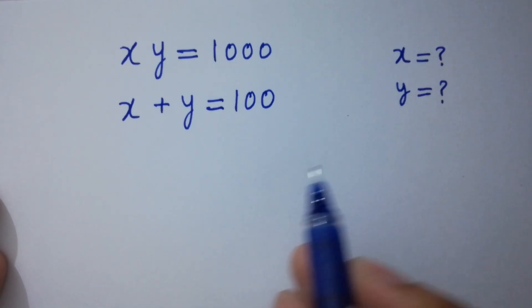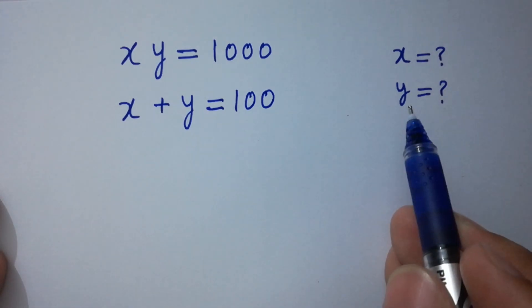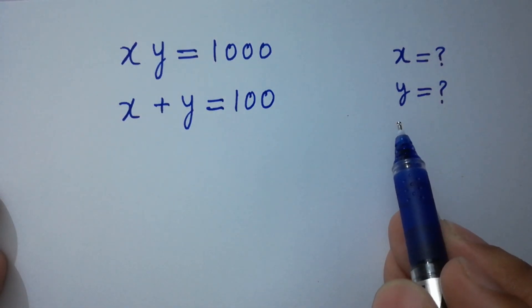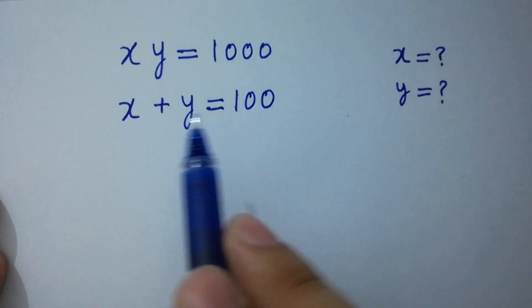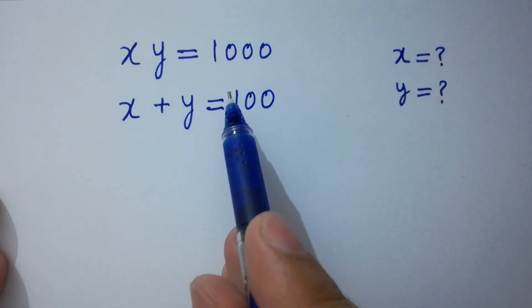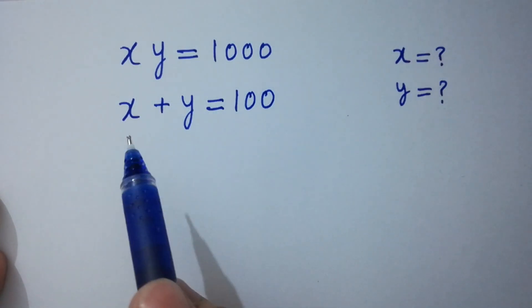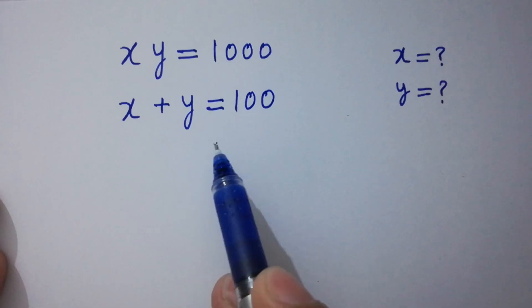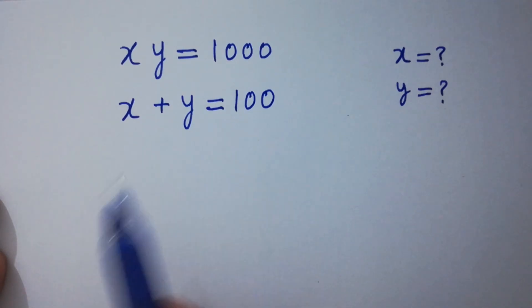Hello friends. Find the value of x and y if xy equals 1000 and x plus y equals 100.